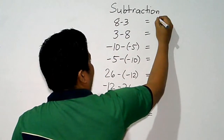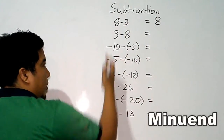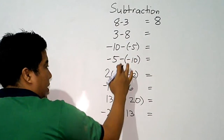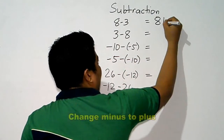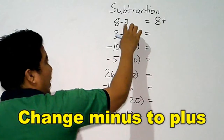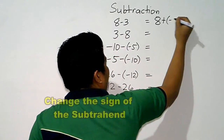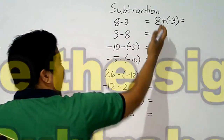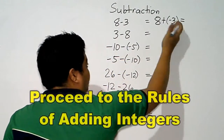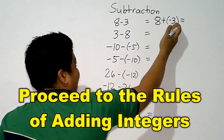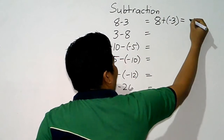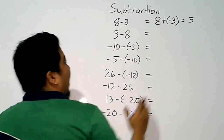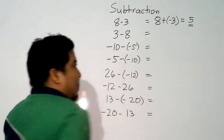8 minus 3: we copy our minuend, change minus into plus, and change our positive 3 into its opposite, negative 3. So we have 8 plus negative 3 — two opposite signs, so we subtract 8 and 3, giving us 5. Since the bigger value is 8 and it is positive, our answer is positive 5.